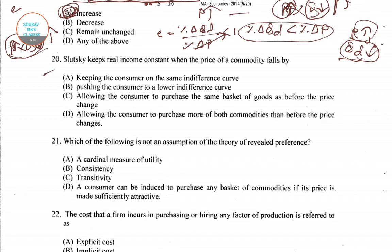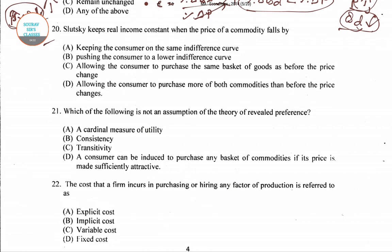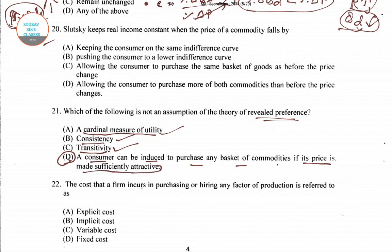We'll come to question number 20 in another video. Now question number 21: Which of the following is not an assumption of the theory of revealed preference? Cardinal measure of utility, consistency, and transitivity are all assumptions of revealed preference. Option D — that a consumer can be induced to purchase any basket of commodities if its price is made sufficiently attractive — is not an assumption. So the right answer for question 21 is option D.